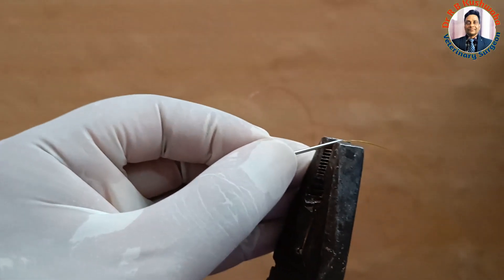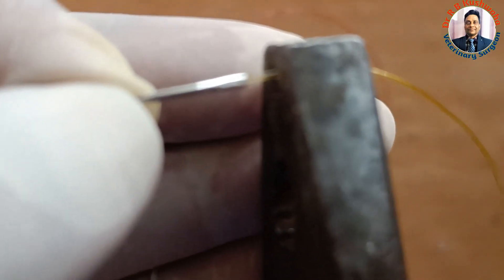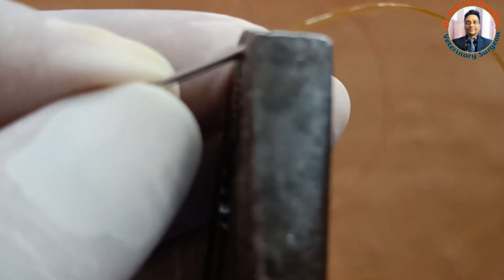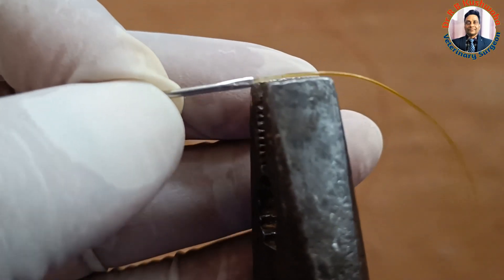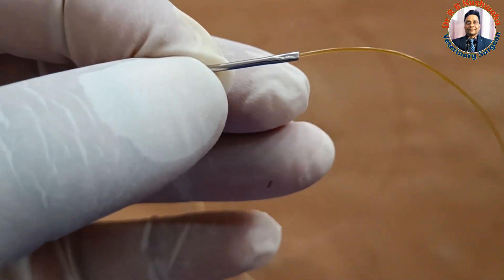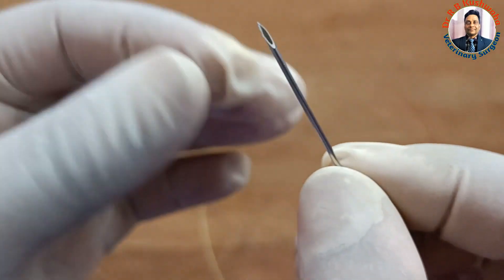Then take the plier and crush. Only crush one side - we should not crush at the thread, only crush the shaft of the hypodermic needle. Otherwise if you crush like this the thread will also be crushed. Now this is ready for suturing.